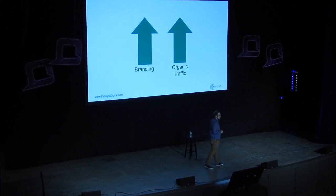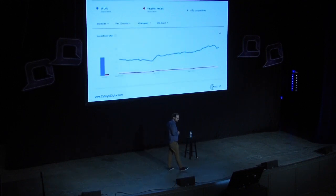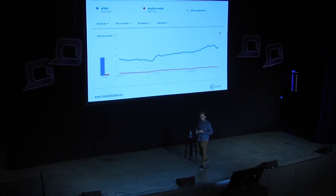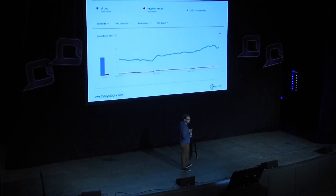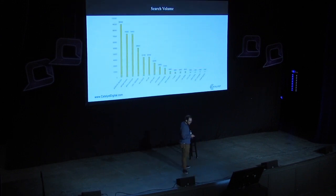Branding goes up, organic traffic goes up. A great example is Airbnb on Google Trends. Look at the trend for Airbnb versus vacation rentals. All of Airbnb's competitors — VRBO, HomeAway, TripAdvisor — they're all optimizing for 'vacation rentals,' whereas Airbnb took the time to build their brand, and they're getting a lot more organic traffic because of that. So do things to build your brand and organic traffic will follow.